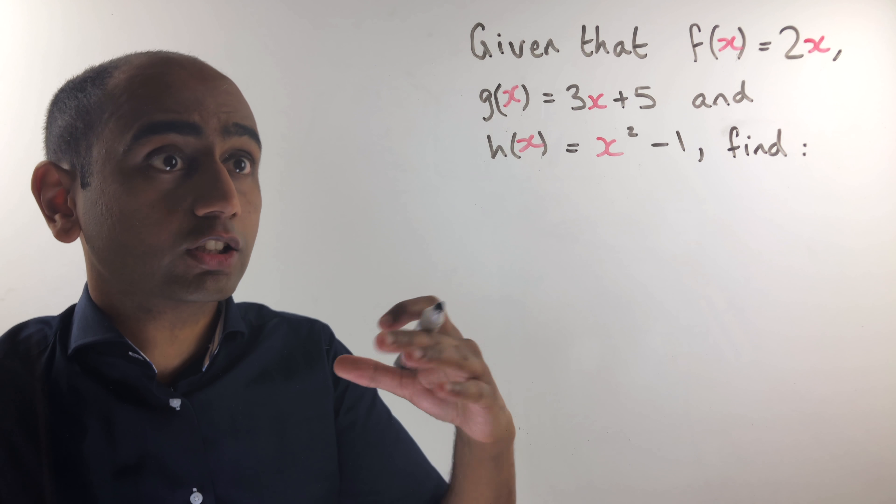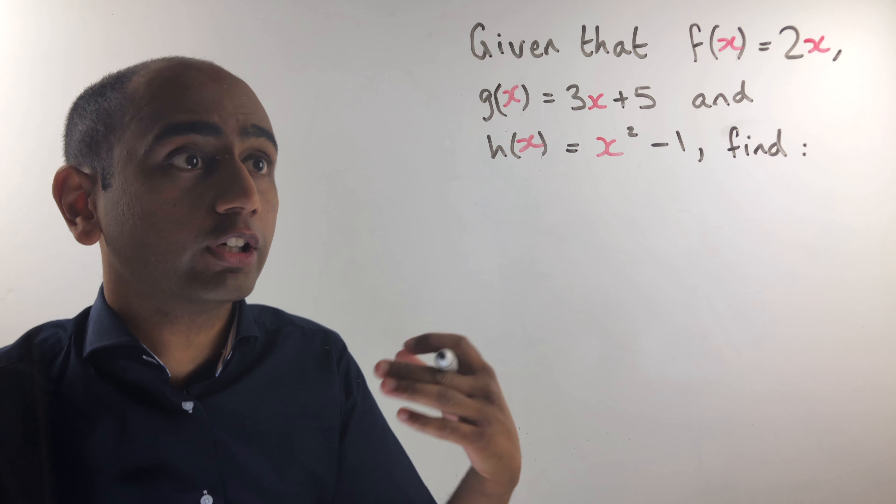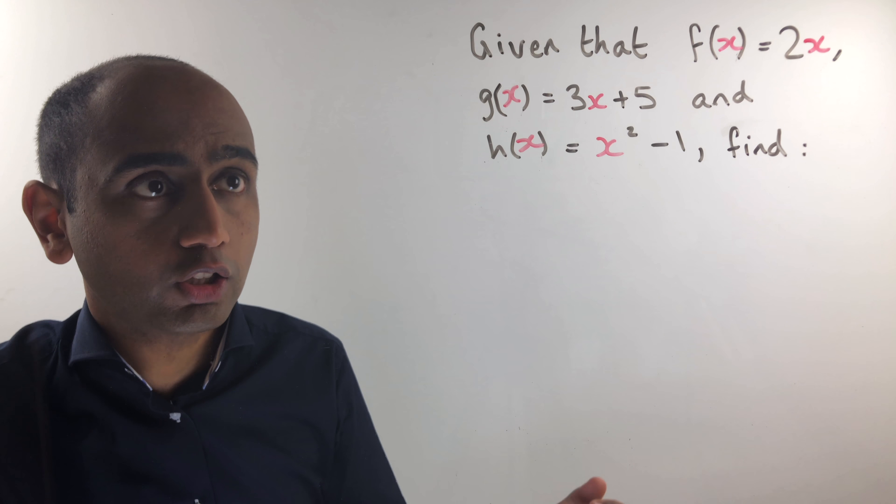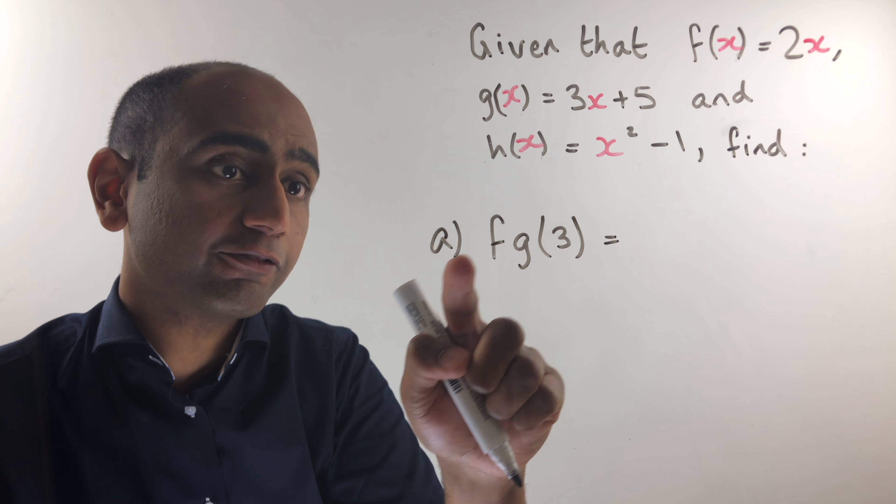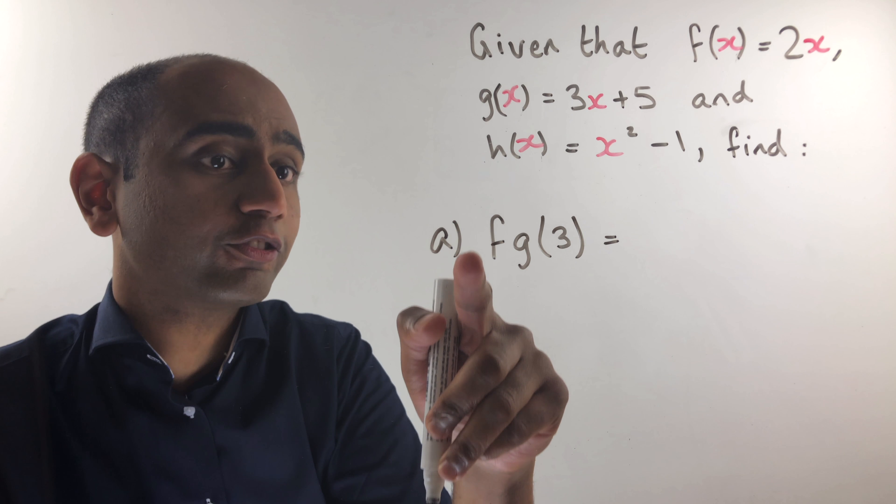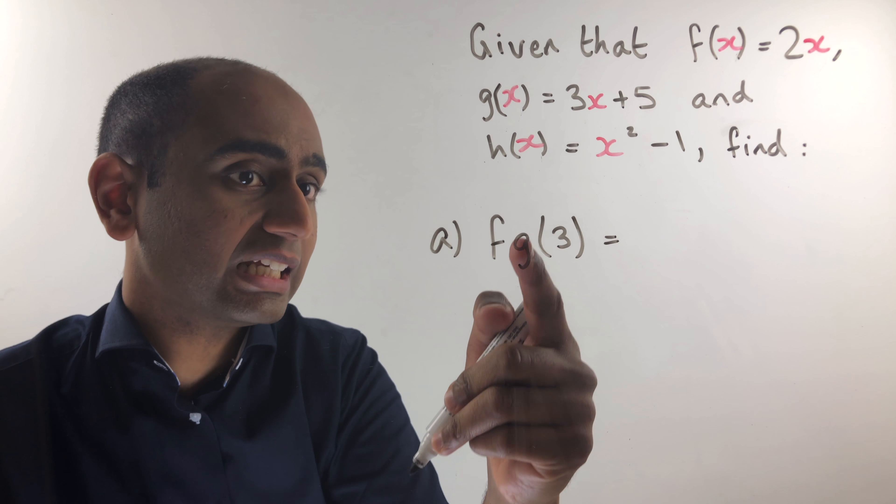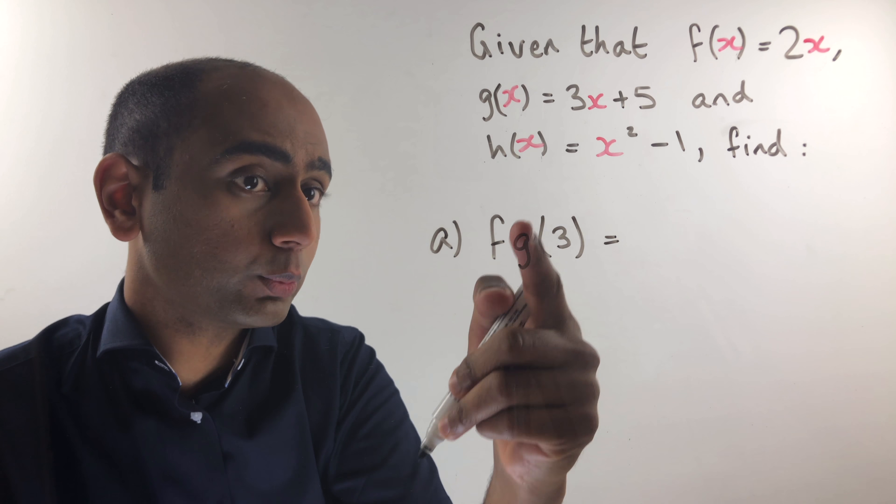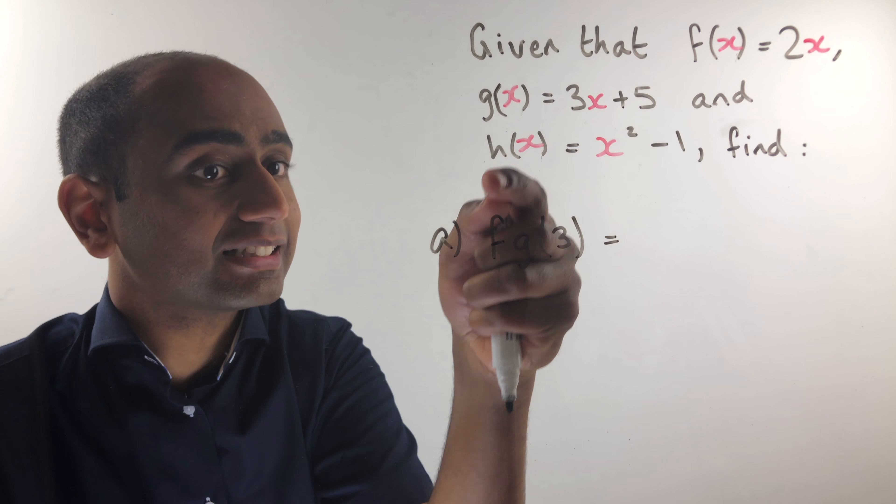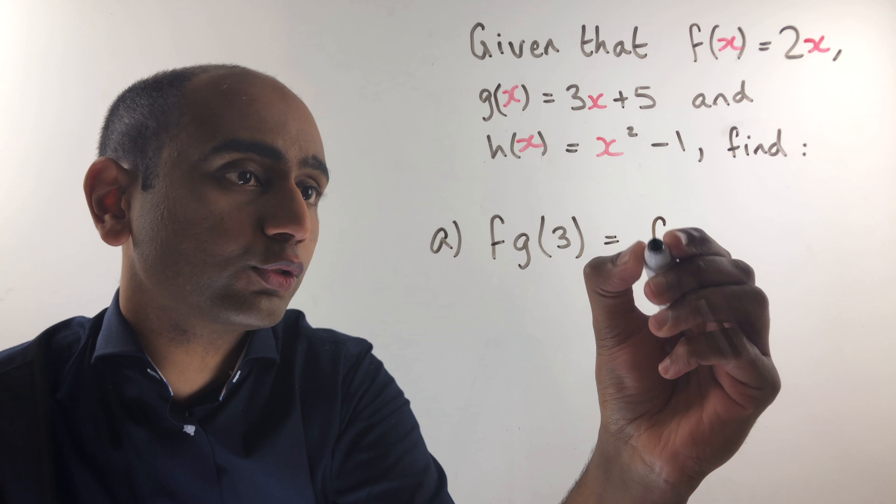In this video we're going to look at composite functions. So this is a function of a function. Let's take a look at the first example. This says fg of 3 and what this really means is that we are doing f of g of 3. We're taking the input 3 and putting it into the function g and whatever we get there we use that as the input for function f. So you could think of this in this form.